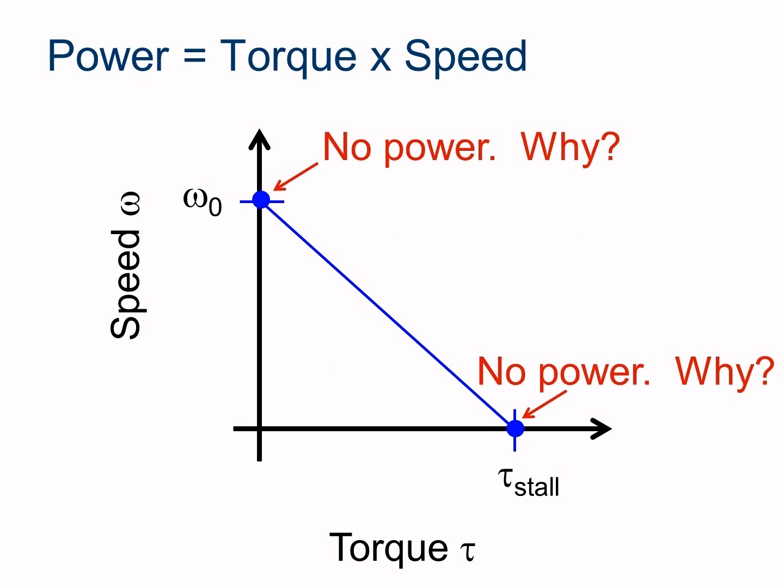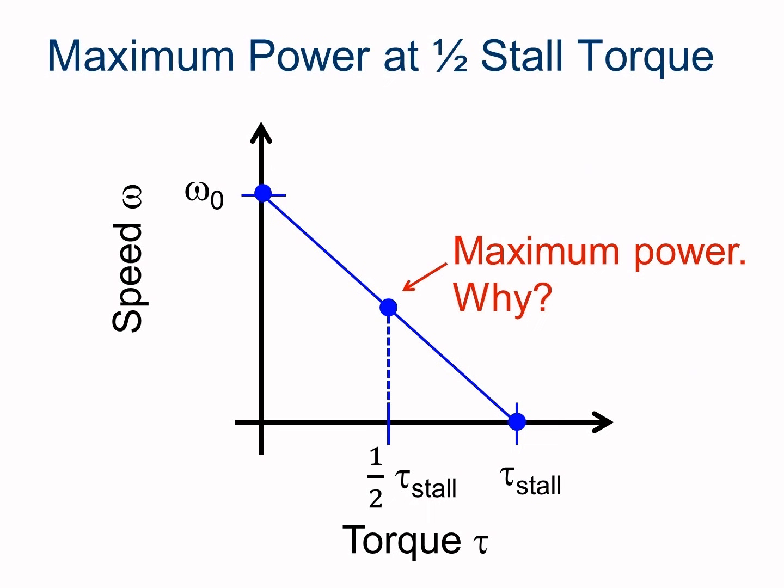Based on our previous equation, torque times speed is power. If either one of these is zero, then power is zero. If omega-naught is really fast, but the torque is zero because we have no load on it, then we have zero power. And at the opposite end of the spectrum, where we have tau stall and lots of torque at our maximum torque, but the speed is zero, again, power is zero. So at both ends of the spectrum here, we're going to get zero power.